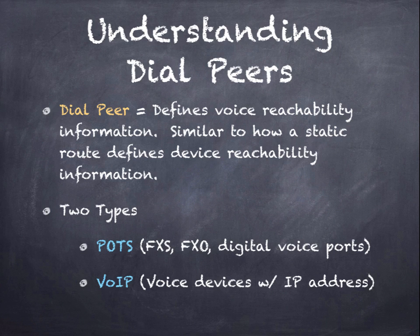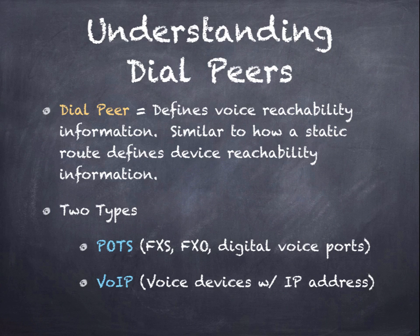Now we move to understanding dial peers. Whether you have analog or digital ports, or VoIP connections, you need a dial peer, which is essentially a static route for telephone calls. It defines the voice reachability information — it has a match criteria and then a next hop, or call leg. There are two types: one points to an analog or digital (non-VoIP) line, and the other is a VoIP dial peer pointing to an IP address.